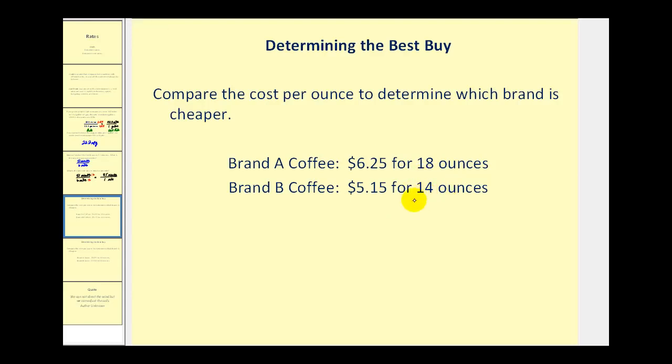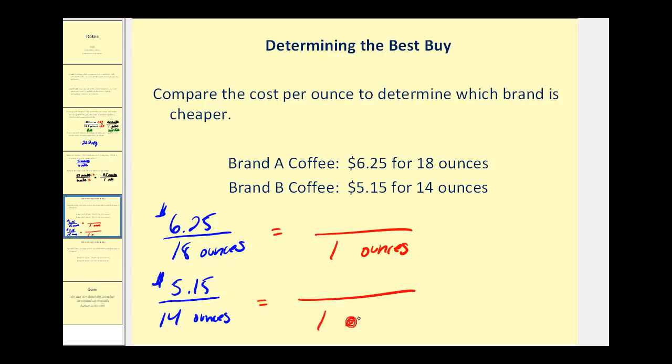Let's go ahead and write our rates, and then determine the unit rates. The first rate would be $6.25 per 18 ounces, and brand B would be $5.15 per 14 ounces. We'll go ahead and rewrite these as unit rates, so the denominator will be one ounce in both cases. We'll divide this by 14 to get the one, and we'll do the same to the numerator. For this first rate, to get a denominator of one ounce, we'll divide both of them by 18.